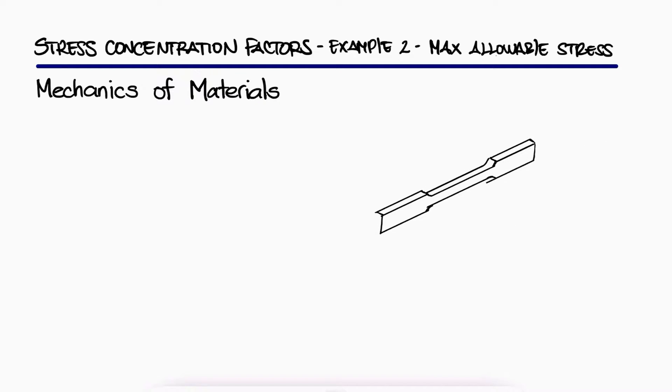If the maximum allowable normal stress is 20 KSI, what is the maximum allowable magnitude of the axial load P?